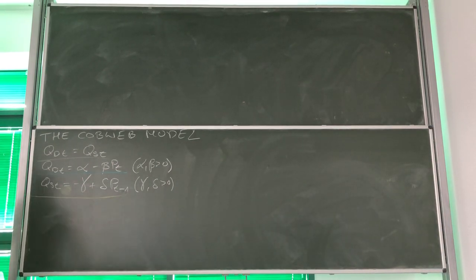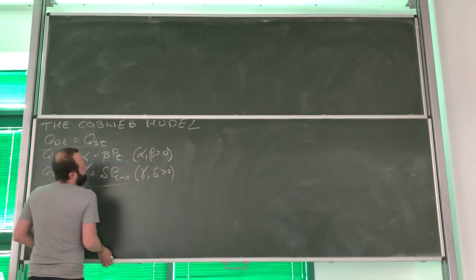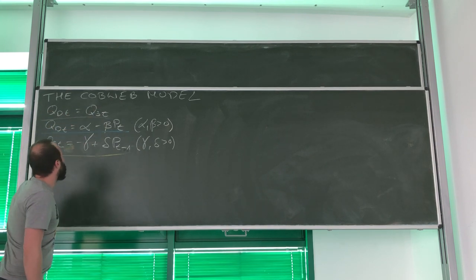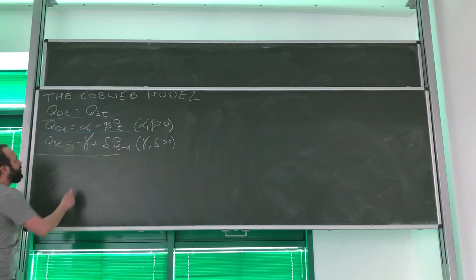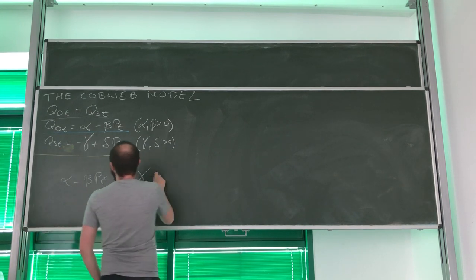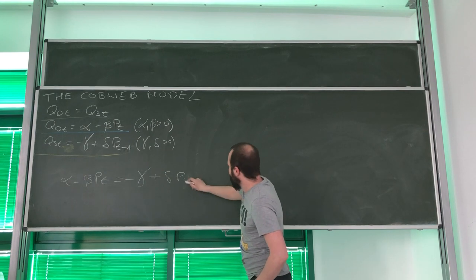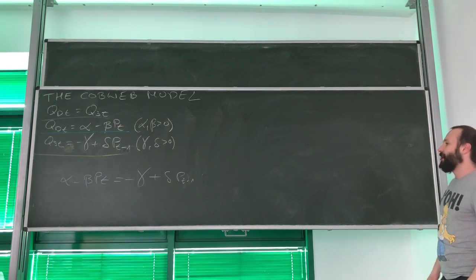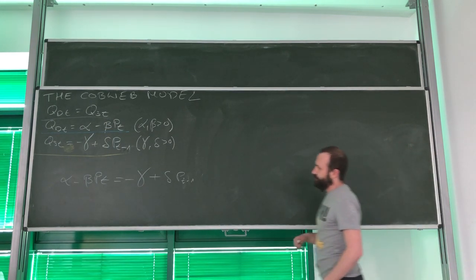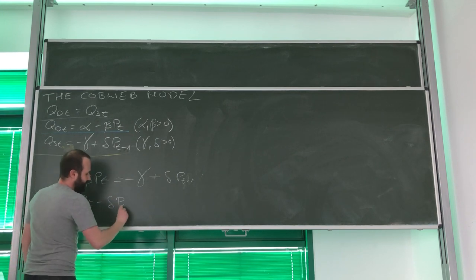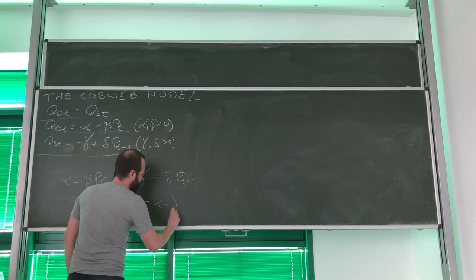Now that we have described our market in detail, let's try to solve the model. We use the equilibrium condition: quantity demanded equals quantity supplied each period. So we have alpha minus beta pt equals negative gamma plus delta pt minus 1. We then move every expression with price to the left-hand side and every expression without it to the right-hand side, giving us: negative beta pt minus delta pt minus 1 equals negative alpha minus gamma.